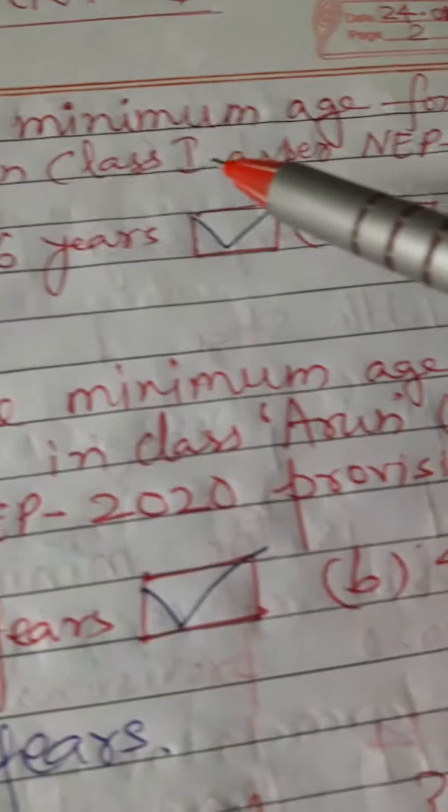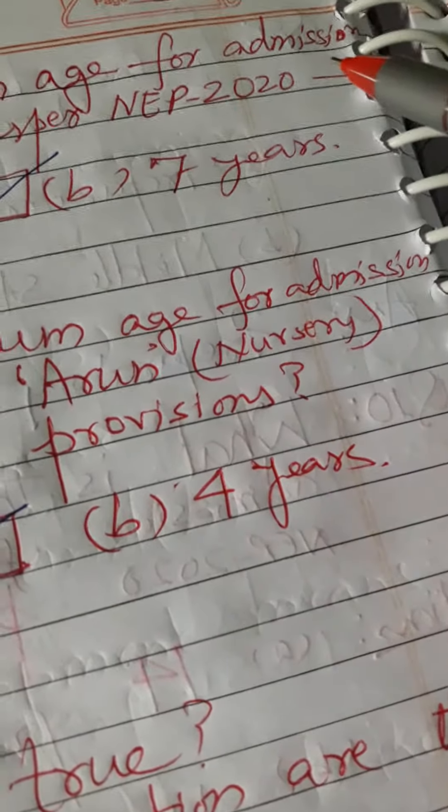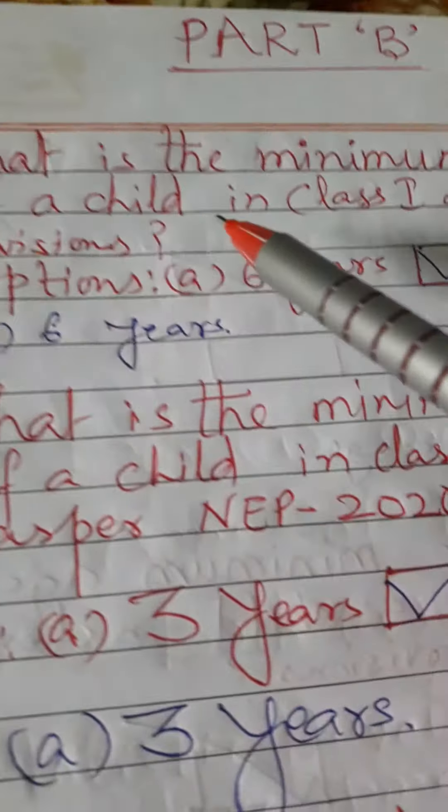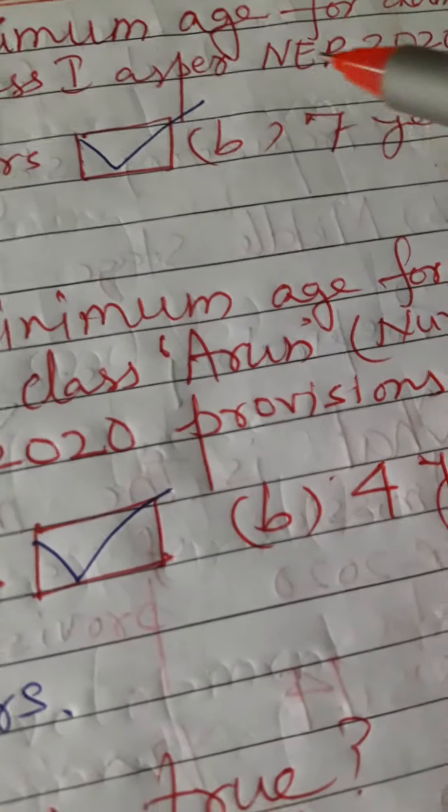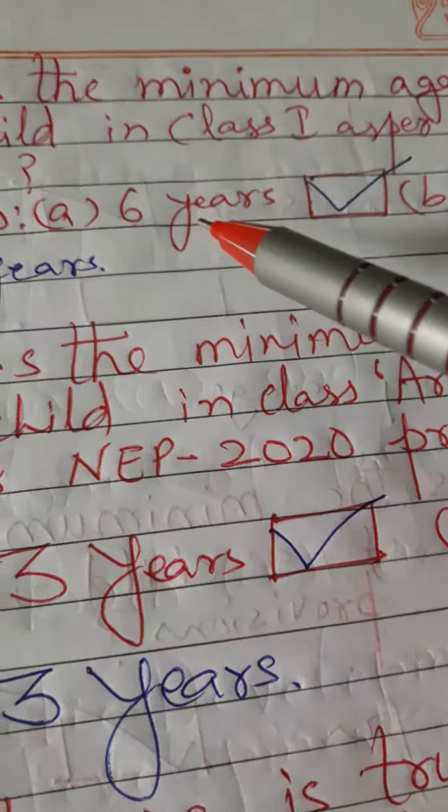Part B. Question 13. What is the minimum age for admission of a child in class 1 as per National Educational Policy 2020? You have two options. First option is 6 years and second option is 7 years. Correct answer is 6 years.